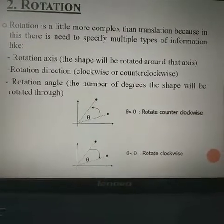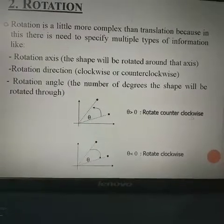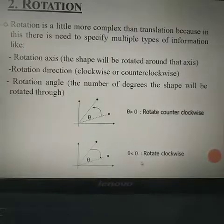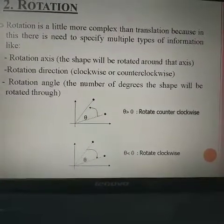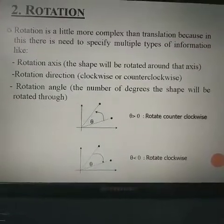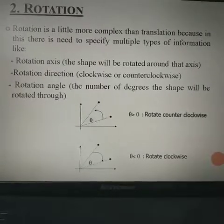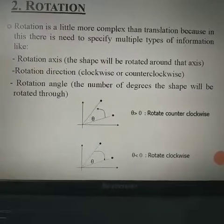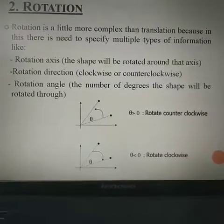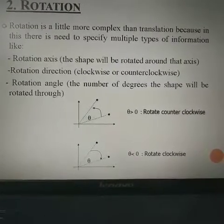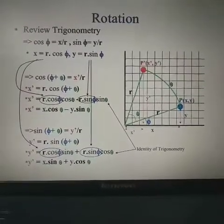If theta is greater than zero, the rotation is in the counterclockwise direction. If theta is less than zero, the rotation is clockwise. So there are three conditions to check: the axis of rotation (x-axis or y-axis), the direction (clockwise or anti-clockwise), and the angle. We check these first, and then we need to understand the trigonometry behind the rotation.